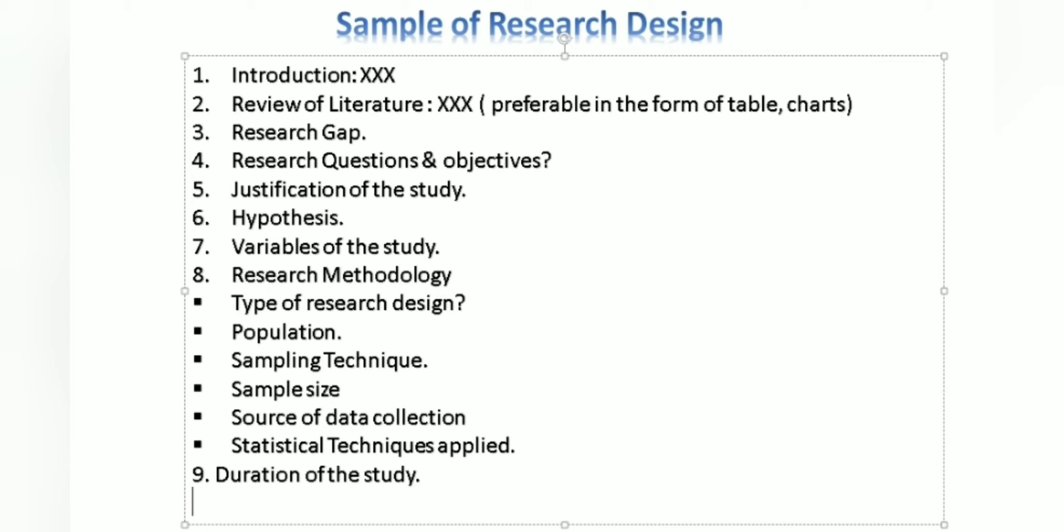Then source of data collection. Based on your objectives, the source of data collection will be considered. If your objective is solely qualitative, then it will be primary. If it is quantitative, then it will be secondary. Accordingly, you have to write the source of data collection. Then statistical techniques applied. You have to identify whether your study is univariate, bivariate, or multivariate. Based on those three, you have to decide which statistical test will be applied.